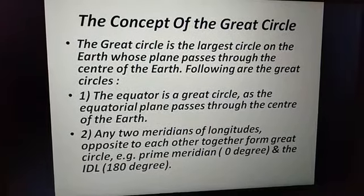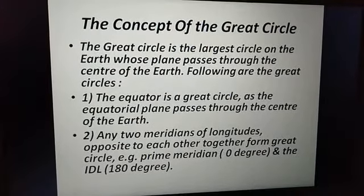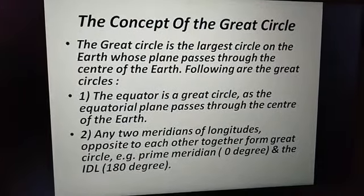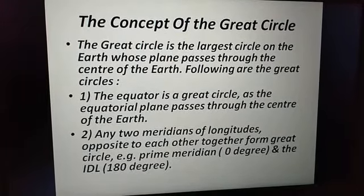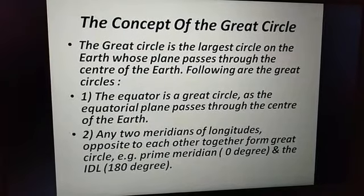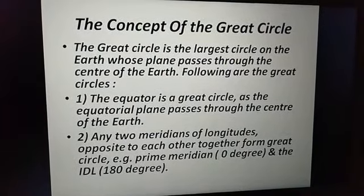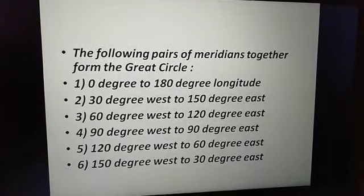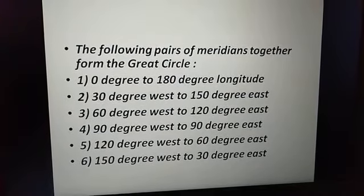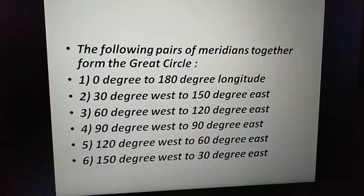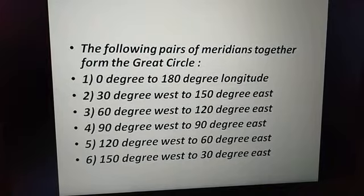Any two meridians opposite to each other together form a great circle. Since a single meridian is a semicircle, any two meridians combined form a full circle. For example, the prime meridian (0 degrees) and the international date line (180 degrees) together form a great circle. From 0 degree to 180 degree longitude is our great circle.